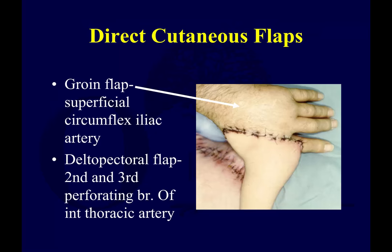A direct cutaneous flap has arteries that run immediately above the muscle and fascia in the subdermal fat with a specific directional orientation. An excellent example of a direct cutaneous flap is a groin flap supplied by the superficial circumflex iliac artery. This unfortunate individual had to have his hand covered, presumably temporarily, with this groin flap.